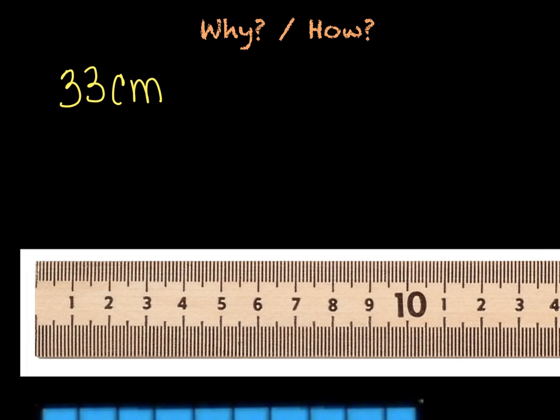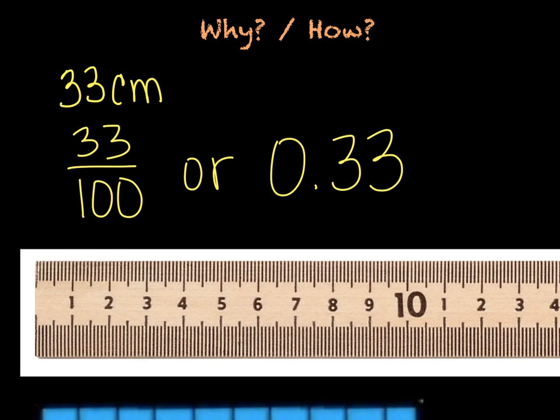Let's do one quick example here. If I had a measurement of 33 centimeters and I need to figure out what my fraction is going to be, my meter is my whole, then that would be 33 out of 100, or zero and 33 hundredths as my decimal.